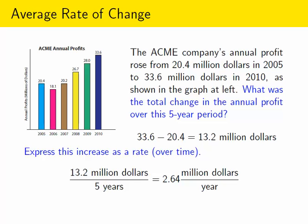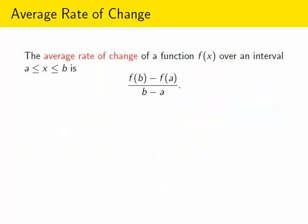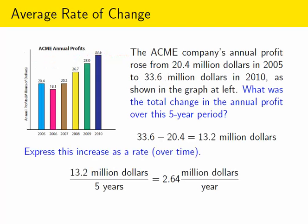So this is a useful idea in mathematics and in many applications, defining the average rate of change of a function. And it's defined by this expression. If you look at this quantity, this is really exactly the same thing we just calculated. In the previous example, a was 2005 and b was 2010. That way, b minus a gave us five, which comes from 2010 minus 2005.